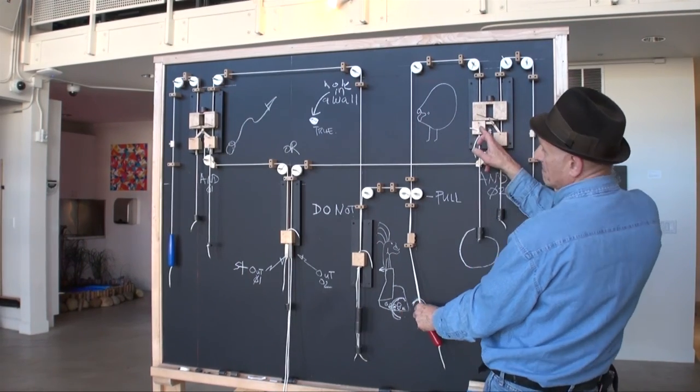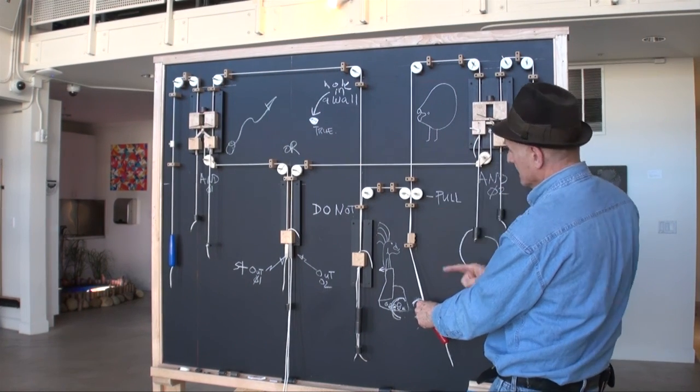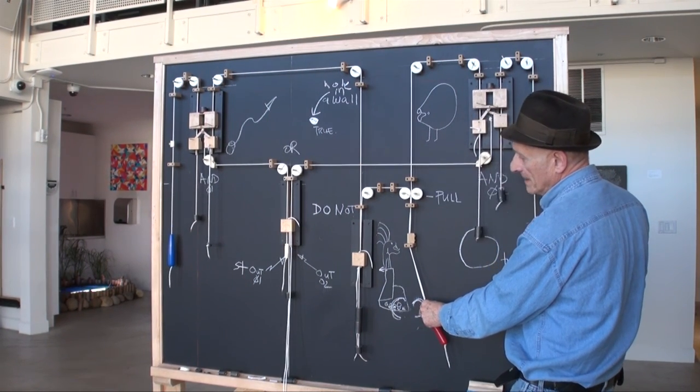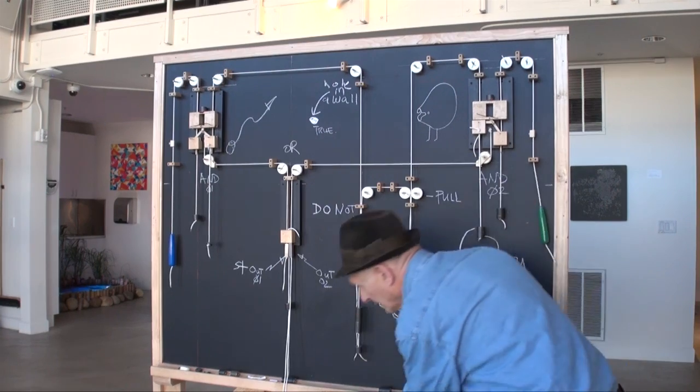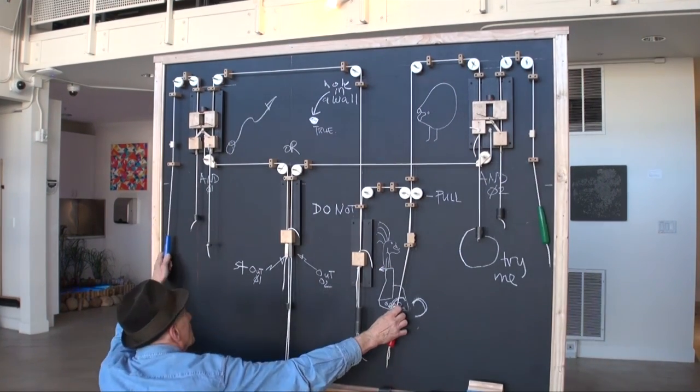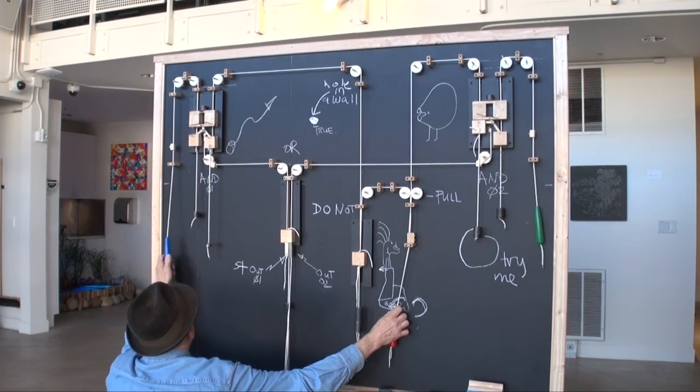So, now this AND gate is primed. And that one isn't. So, when I pull this handle, I get an output. But, if I come over here, and pull this handle, I don't.